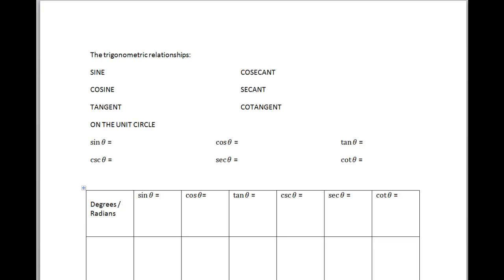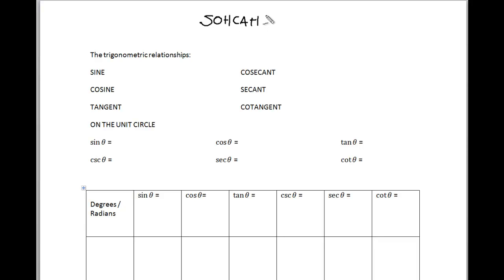This is Mr. Andersen for Kellogg Community College and we're going to be looking today at the second half of the video for the first session of trigonometry. We're going to talk first of all about some trigonometric relationships. The trigonometric relationship between sine, cosine, and tangent is really a triangle relationship. One of the common ways to know your sine, cosine, tangent relationships is with the SOH CAH TOA method.